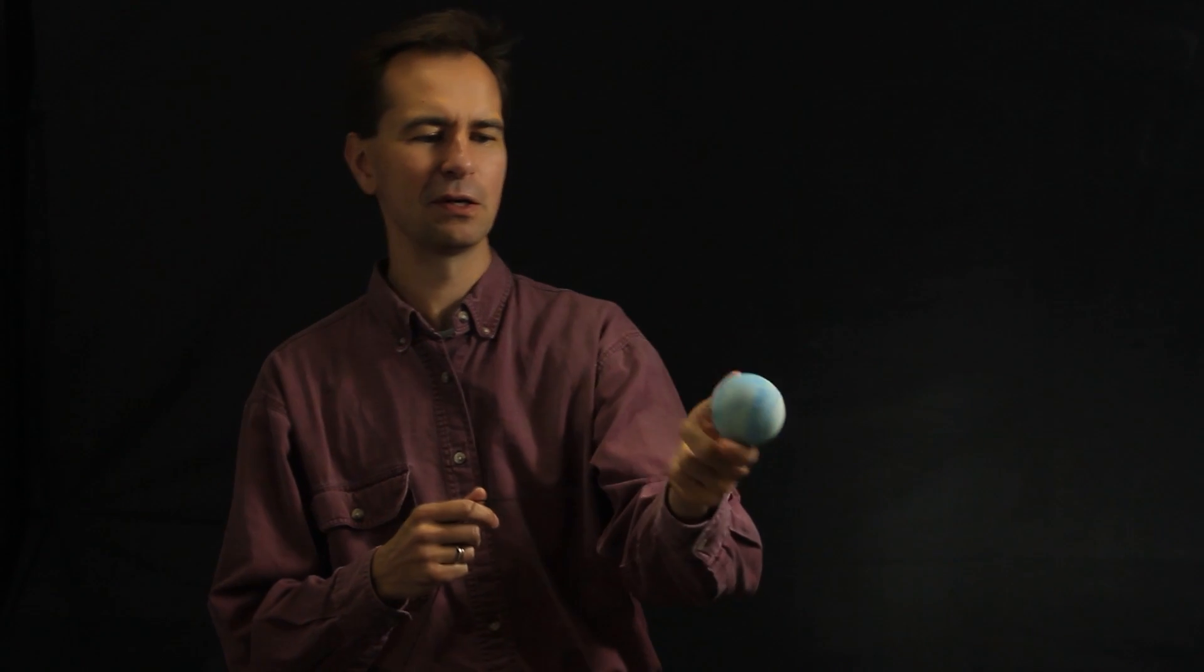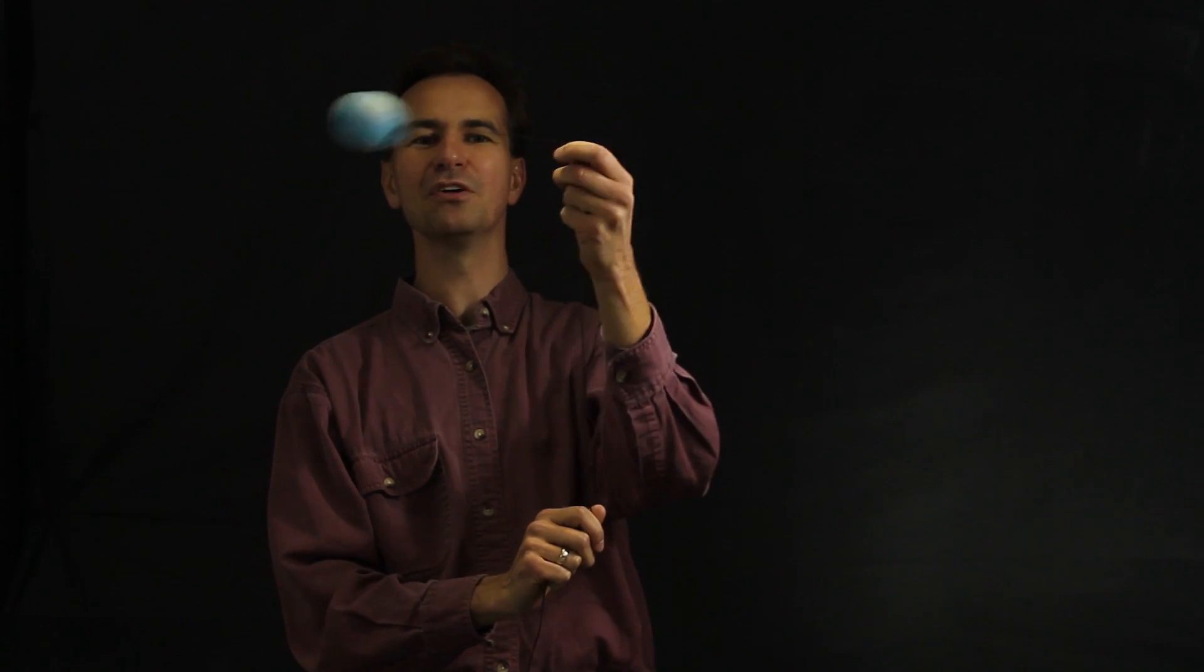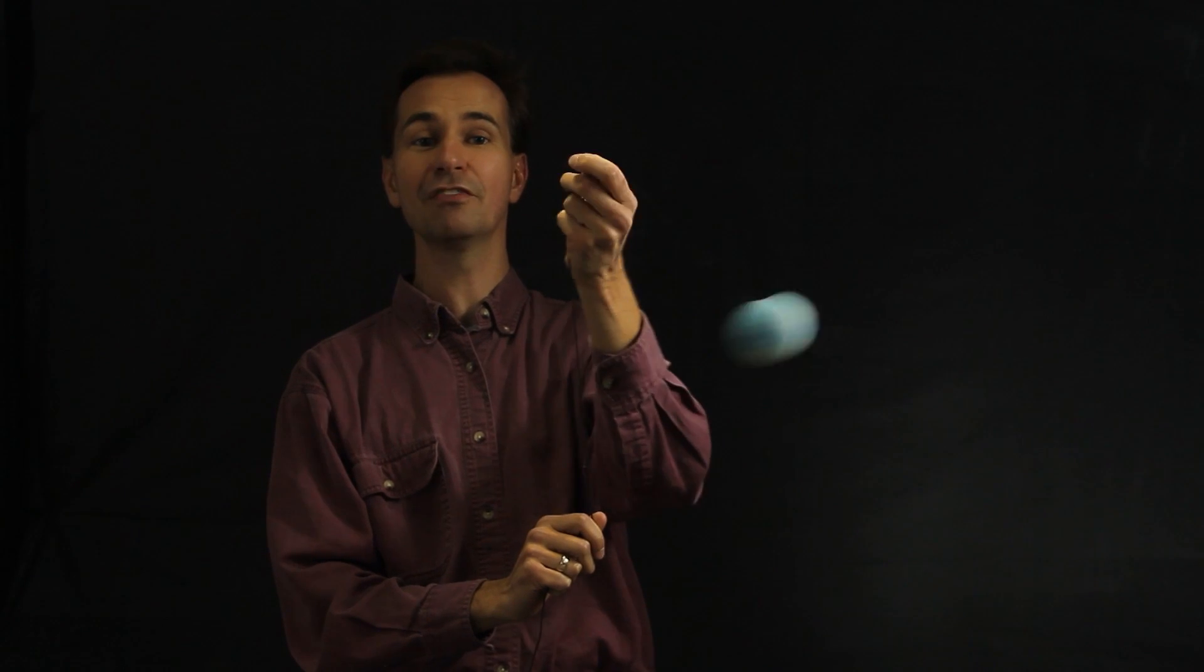So, whenever you have something going in a circle, say like this ball, I'm going to swing it around on a string. This string is pulling on this ball, making it go in a circle. Otherwise the ball would just fly off in a straight line.